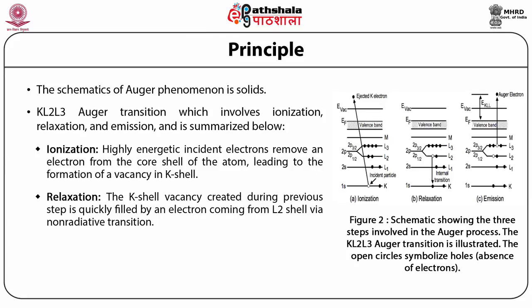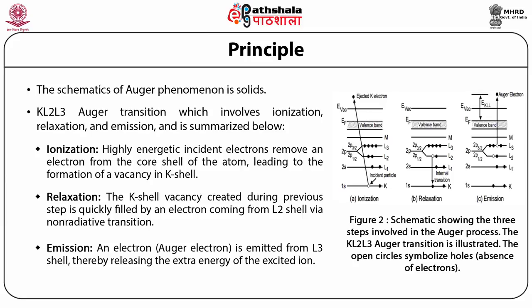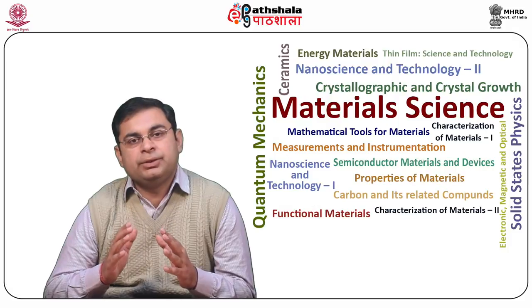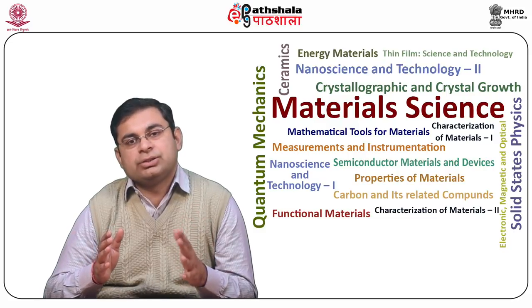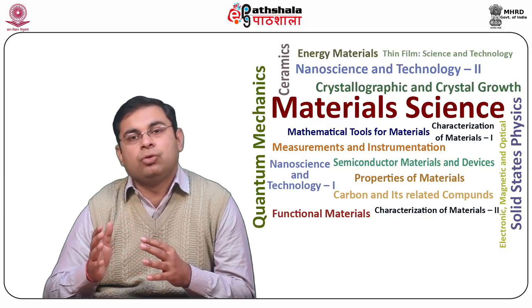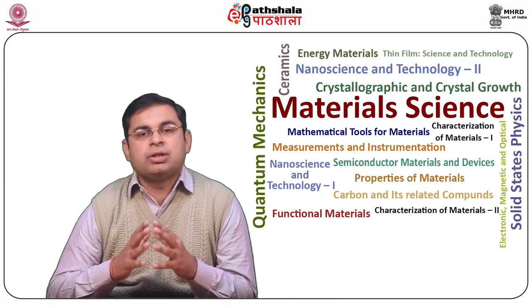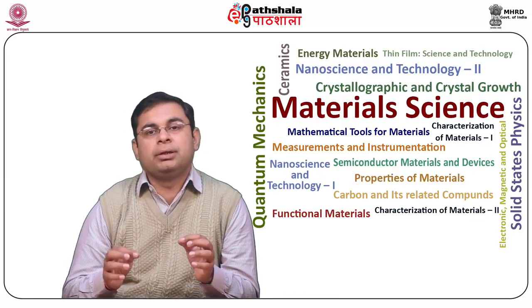Relaxation: the K shell vacancy created in the previous step is quickly filled by an electron coming from the L2 shell via a non-radiative transition. Electron emission: an electron is emitted from the L3 shell, thereby releasing the extra energy of the excited ion. Auger transitions are named on the basis of the energy levels involved in the process. For example, the transition in the above figure is named K, L2, L3. In certain cases, such as atoms with high atomic number, many Auger transitions are available. However, most have low probability, and some energetically allowed transitions are also forbidden by selection rules.